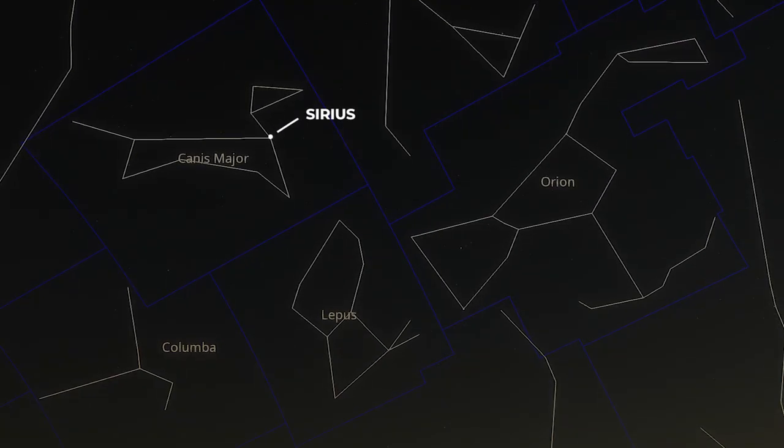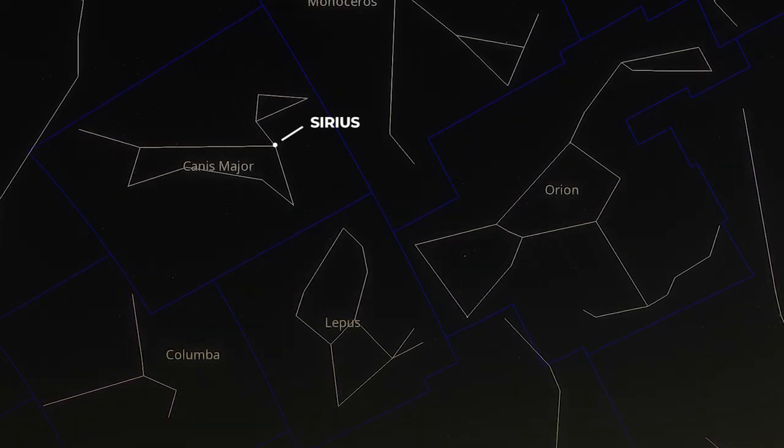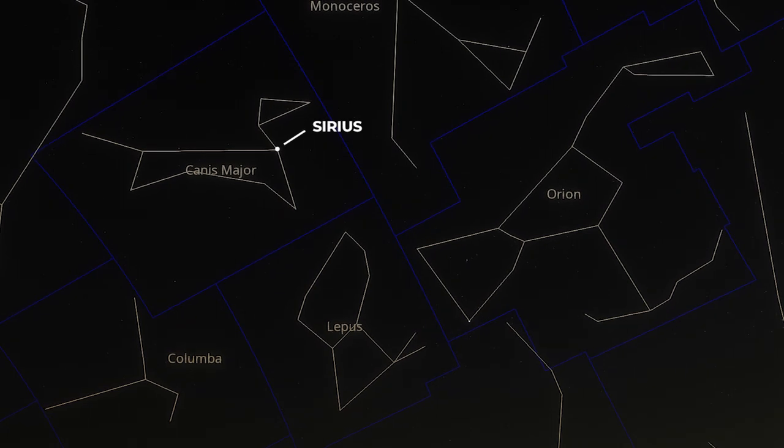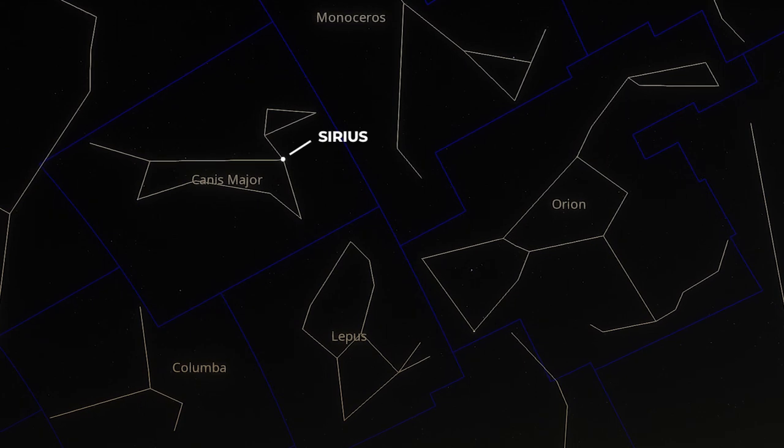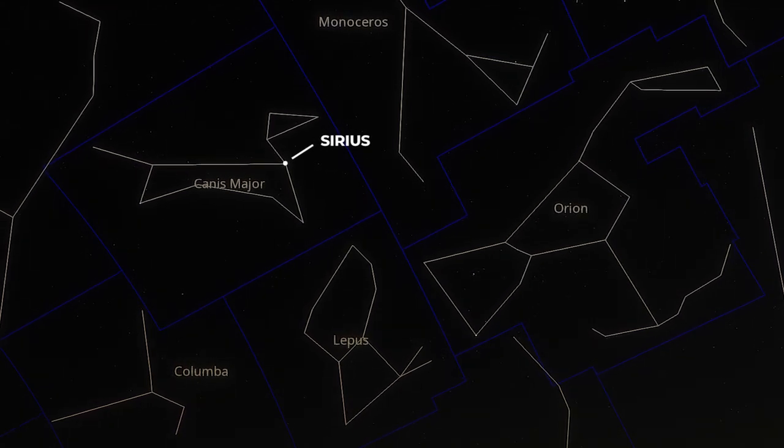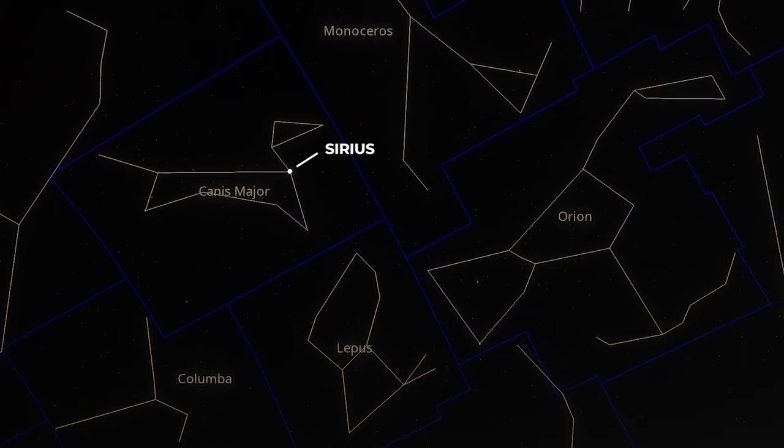One easy way to find Sirius in winter evening skies is to locate Orion, which dominates this region of the sky. The bright star is a short distance southeast of Orion. In fact, the three stars of Orion's belt can be used as a pointer to Sirius.